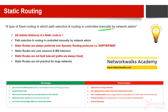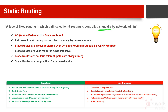Some important characteristics of static routing: the admin distance of static routes is always one, although it can be changed, which is called floating static routes. The path selection and routing is controlled manually by the network admin. Static routes are always preferred over dynamic routes because they have less admin distance, which is one. Other routing protocols like OSPF in Cisco have an admin distance of 110, while RIP has an admin distance of 120, and BGP has 220.